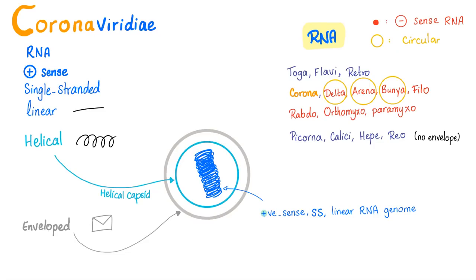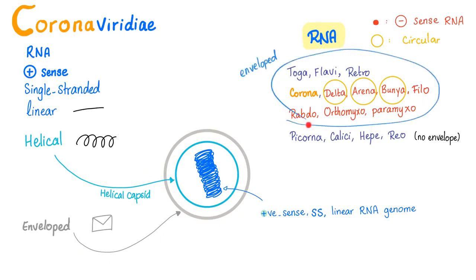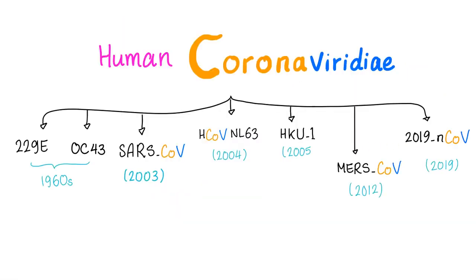The capsid of the coronavirus is helical, as opposed to icosahedral. It is an enveloped virus, as opposed to naked. Some of you may think coronaviruses have only been discovered recently — not true. They are as ancient as the 1960s; the latest one was discovered just 23 days ago.